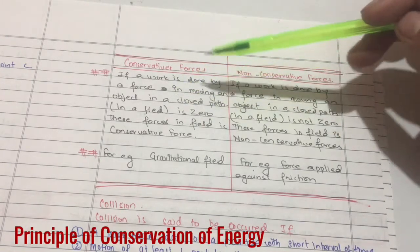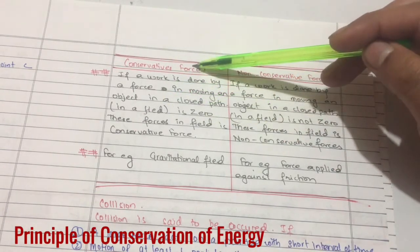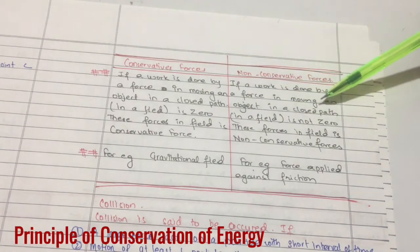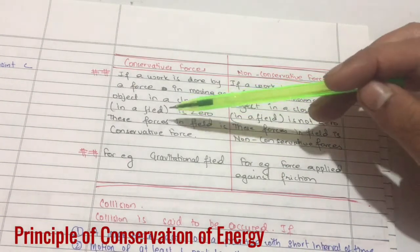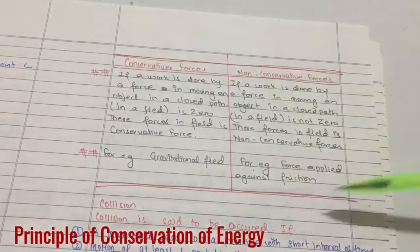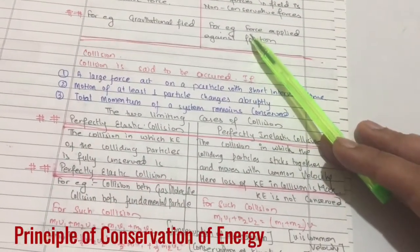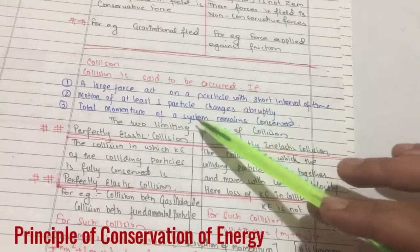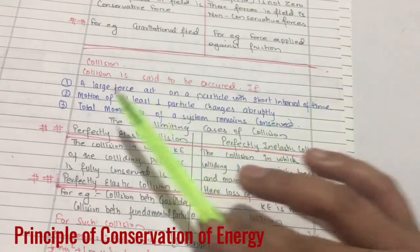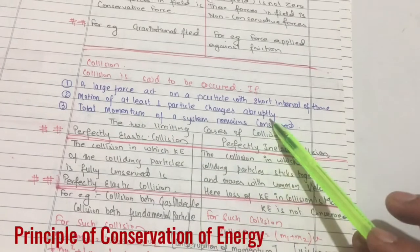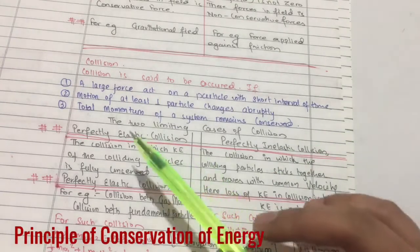Let us see what is collision. Collision is said to be if a large force acts on a particle with a short interval of time and motion of at least one particle changes abruptly. Total momentum of the system remains conserved. There are two limiting cases of collision: perfectly elastic collision and perfectly inelastic collision.